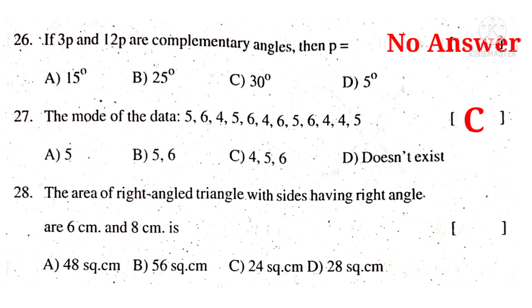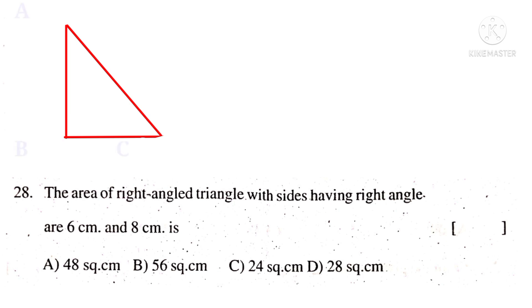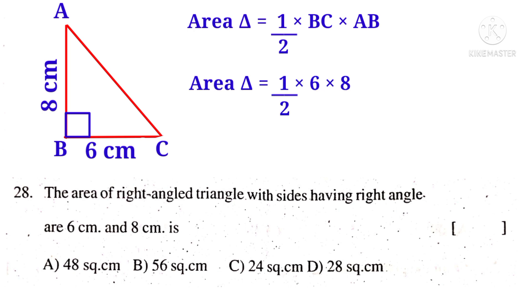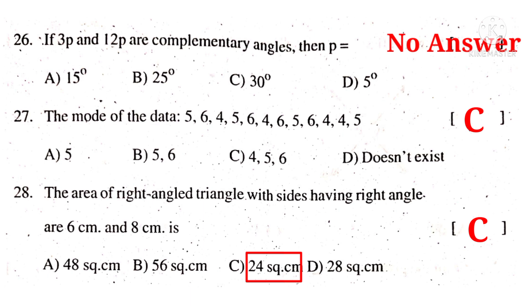28. The area of a right angle triangle with sides having a right angle are 6 centimeters and 8 centimeters is. Take a right angle triangle. Take the vertices ABC and right angle at B. Now AB is 8 centimeters. BC base is 6 centimeters. Now area is equal to half into BC into AB. Half into base into height. So half into base is 6. Height is 8. On simplification by 2, 2, 6 are 24 square centimeters. So the correct choice is C.